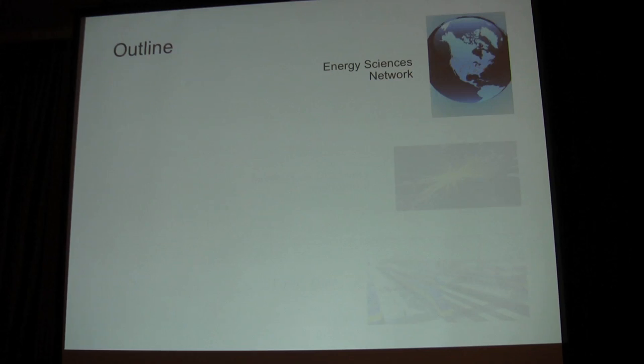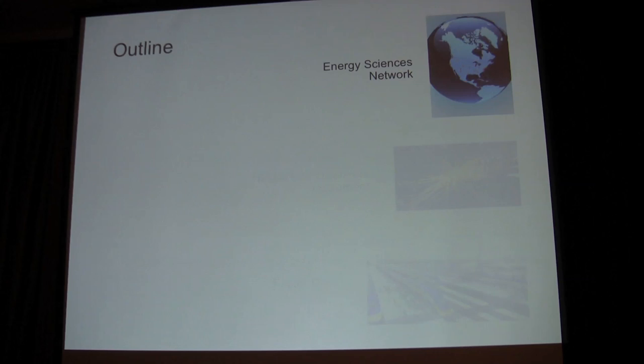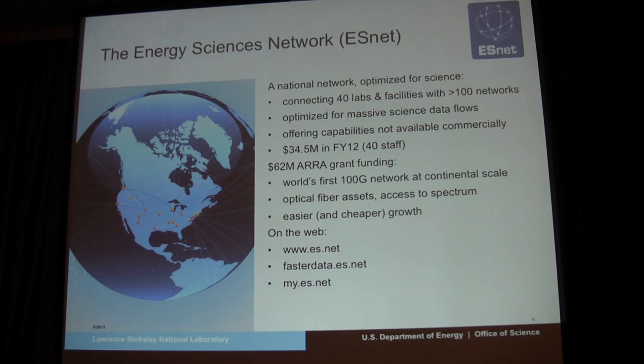I'll start by mentioning just a few facts about the Energy Sciences Network. For those of you at JGI or outside of JGI who know Susan Lucas, we've just hired Susan to be our new deputy for business operations. Her deep experience in BER is a great advantage to us. She wanted to be here today, but she's busy overseeing business operations in ESNet today. We are a national-scale network — a kind of circulatory system for the Department of Energy. About a $35 million organization, a staff of 40.